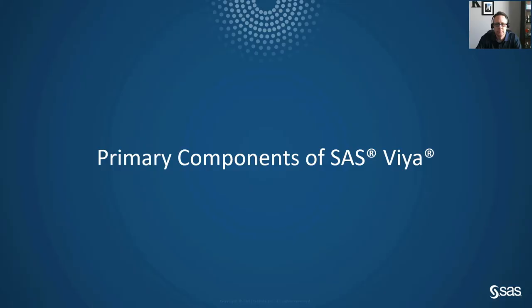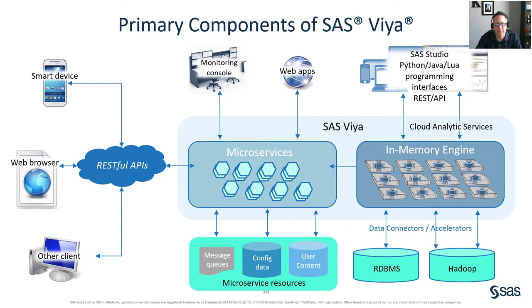Our next topic focuses on the primary components of the SAS Viya ecosystem. This is a graphical representation of the SAS Viya ecosystem. At the heart of this ecosystem is CAS, the in-memory processing engine, and microservices, which replace the metadata server in SAS Viya. CAS can be accessed by SAS Studio as well as the API of your choice. That also connects to various data sources such as Hadoop, Teradata, file systems, or relational databases. You can also access CAS through the microservices via REST APIs, web apps, other monitoring consoles, and other clients.